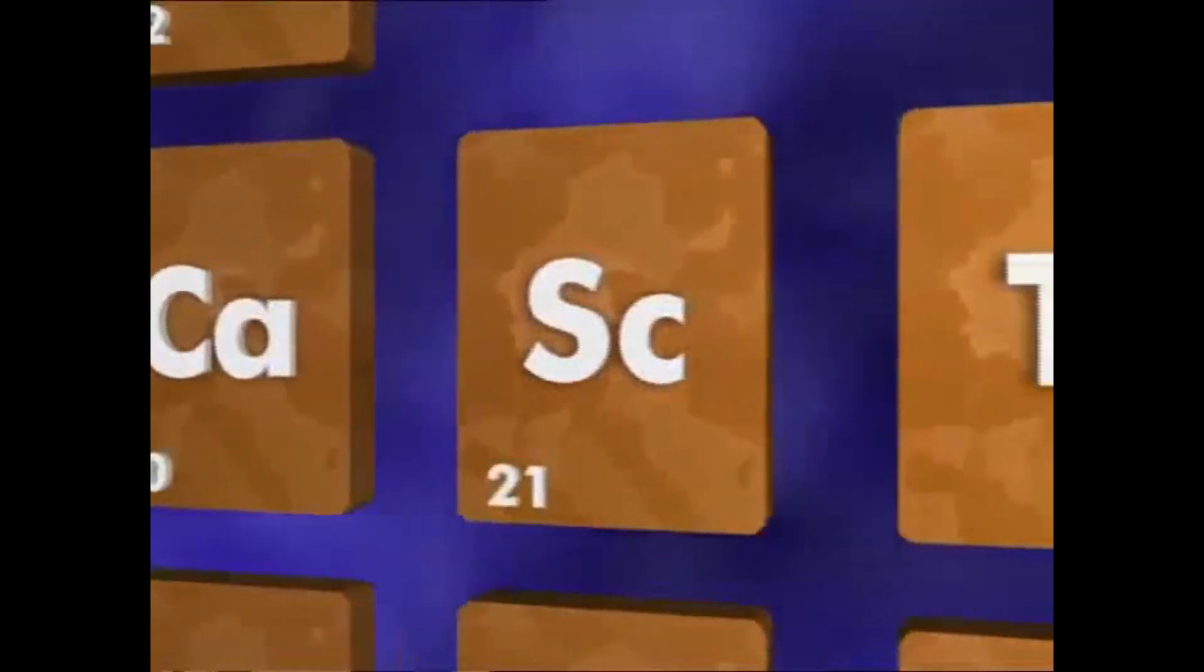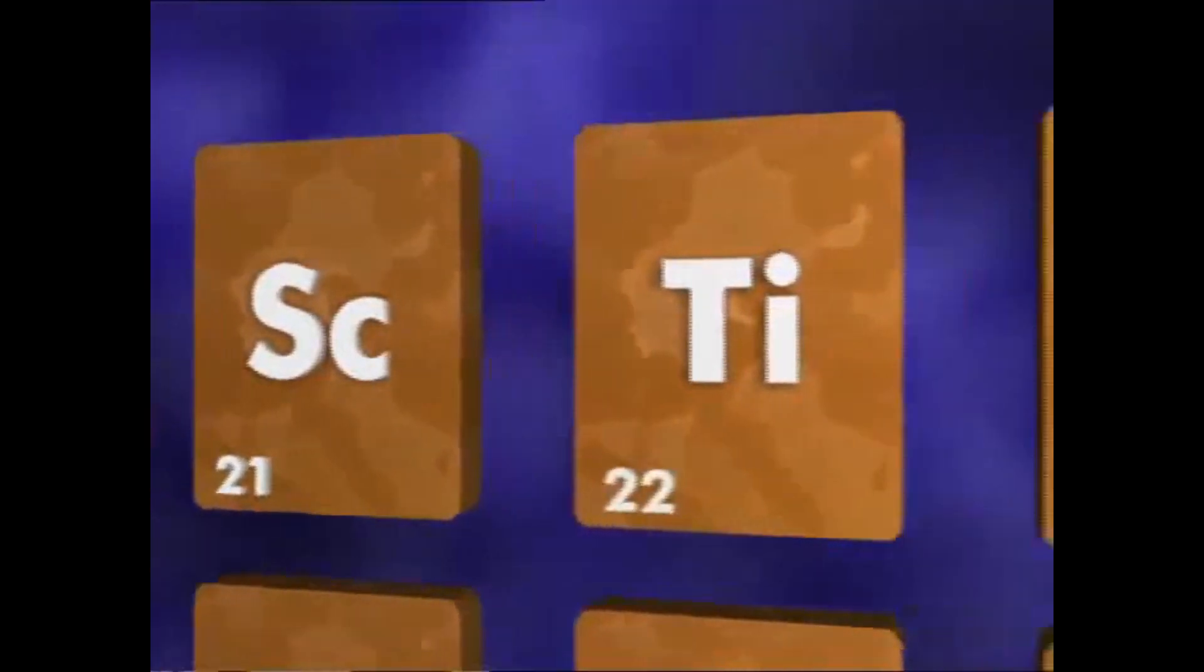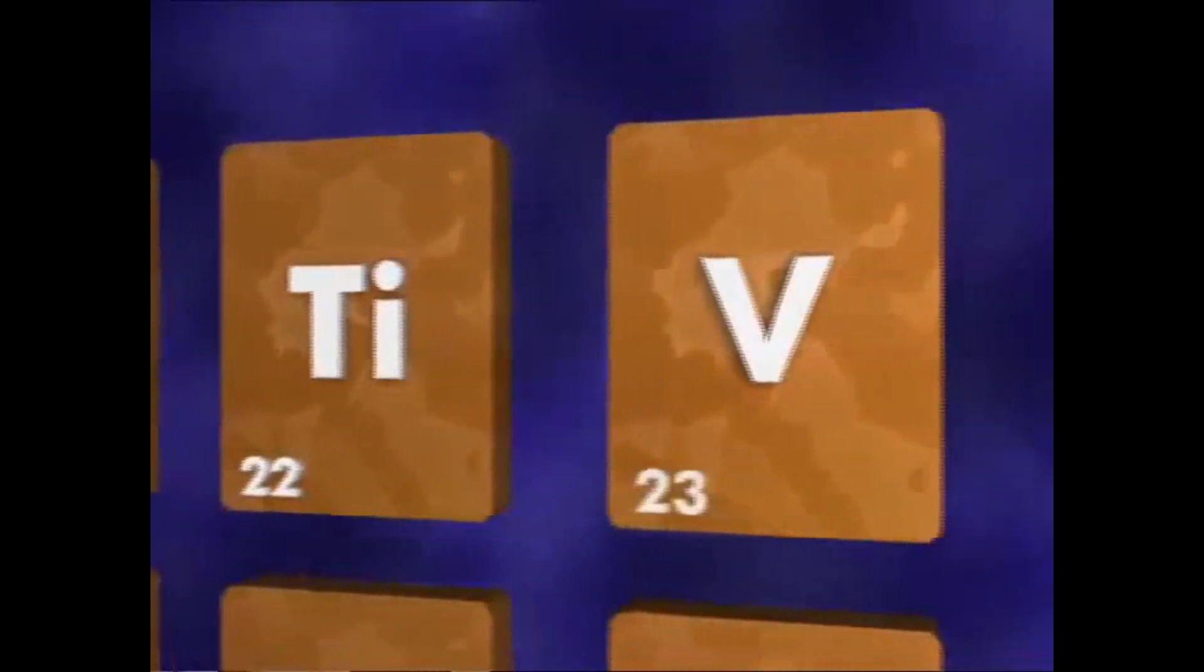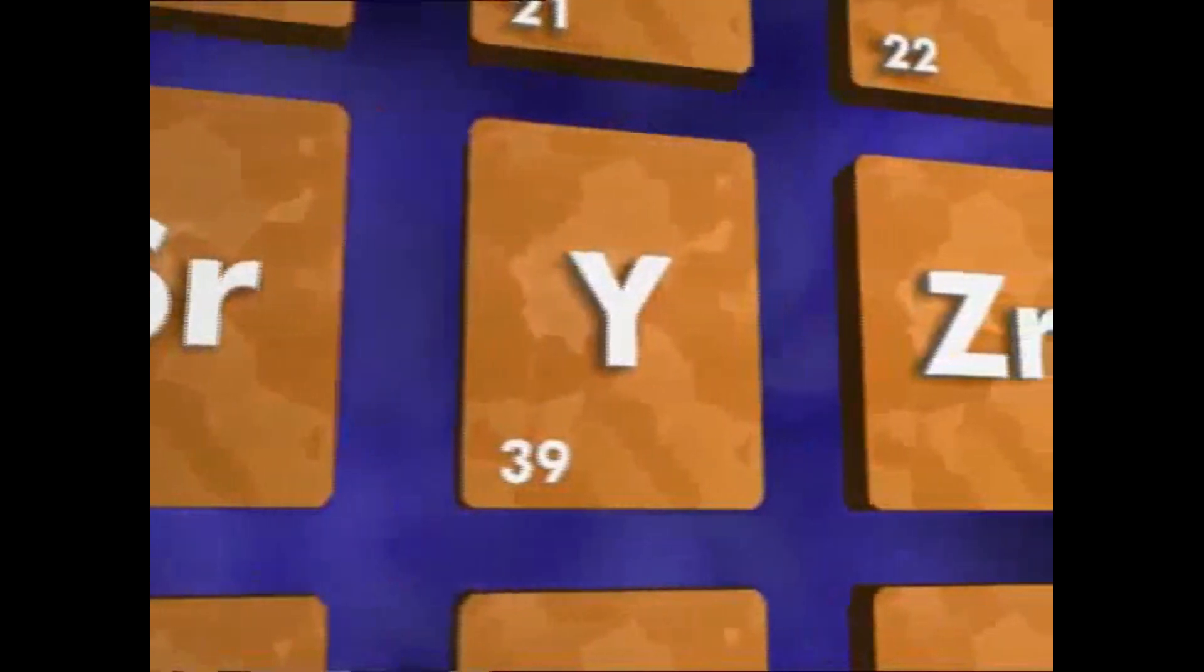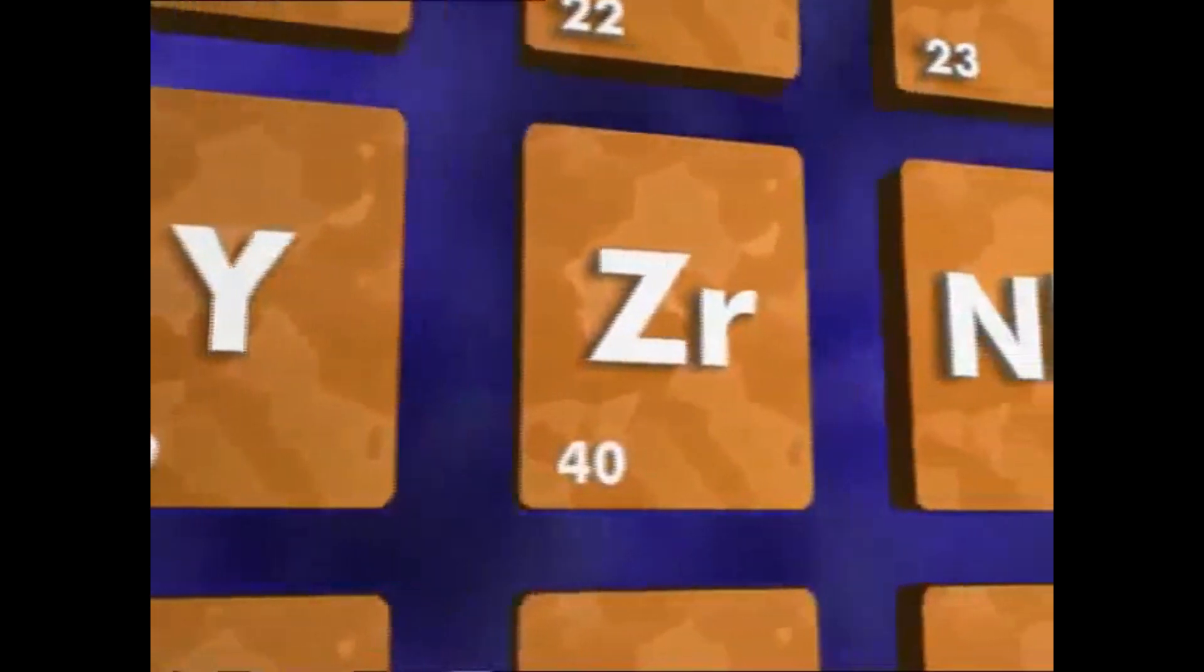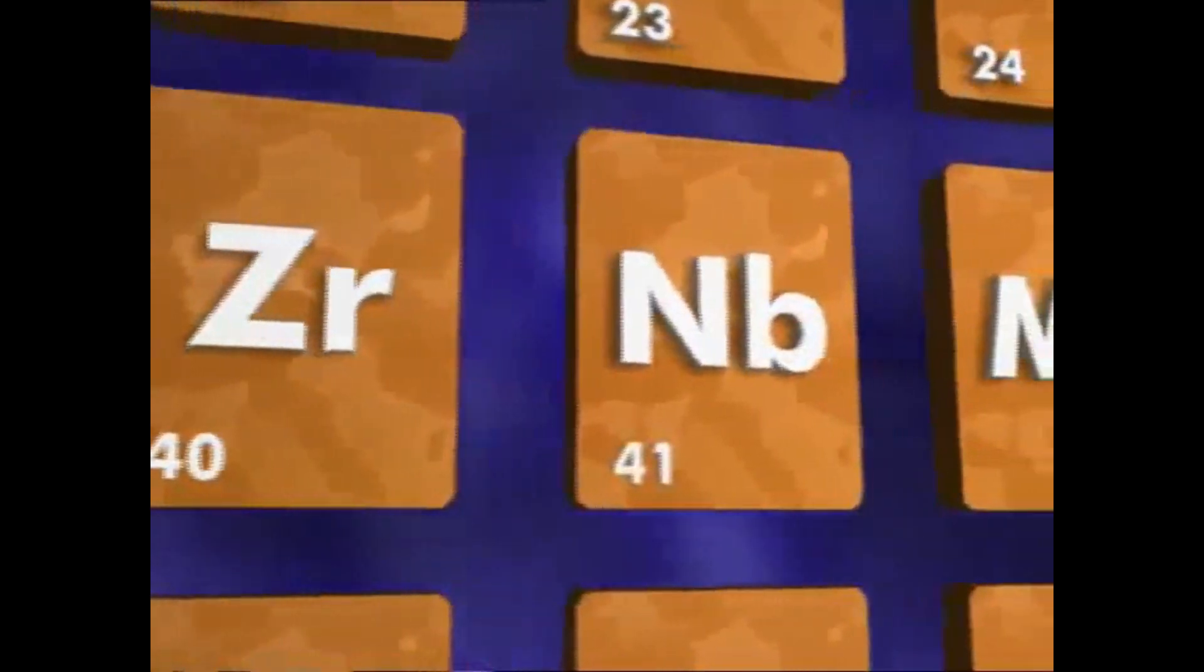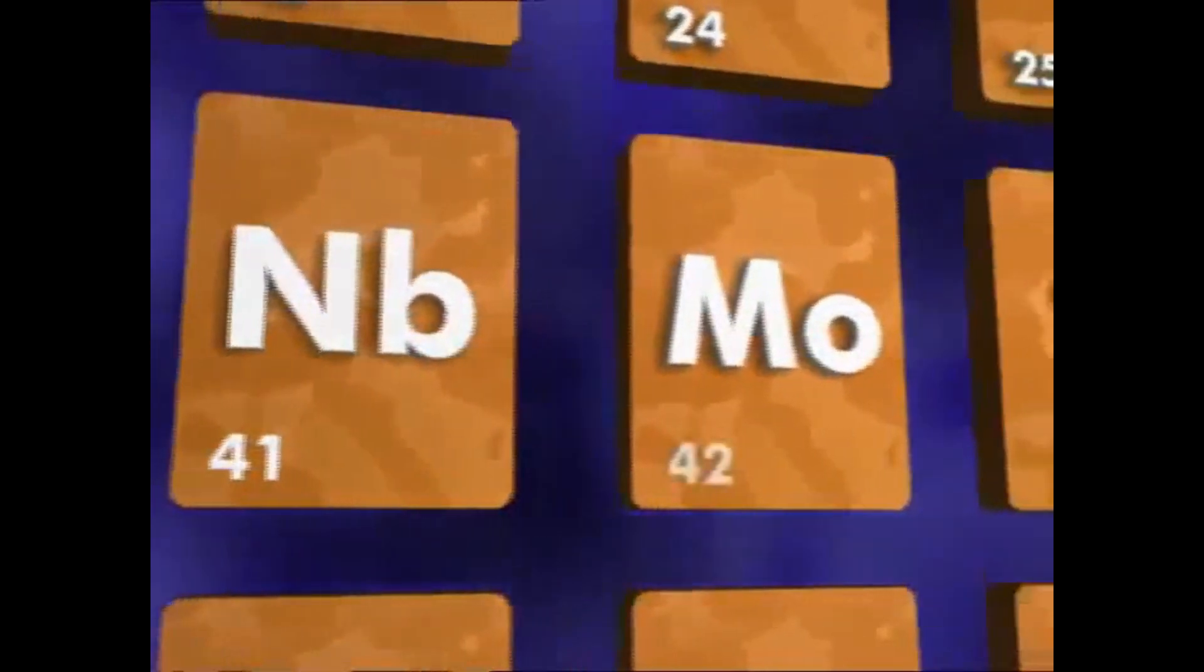As you move across a row from left to right, the number of protons increases by one, so the atomic number also increases by one. An element's atomic number determines its position in the table.